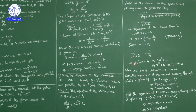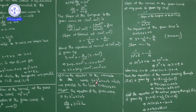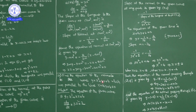When x = 2, substituting in the curve: y = 8 + 4 + 6 = 18, giving point (2, 18). When x = -2: y = -8 - 4 + 6 = -6, giving point (-2, -6). So slope of the normal is -1/14 at both points (2, 18) and (-2, -6).